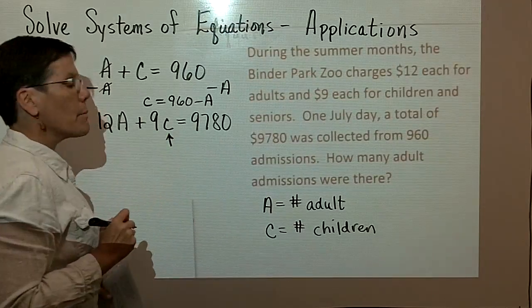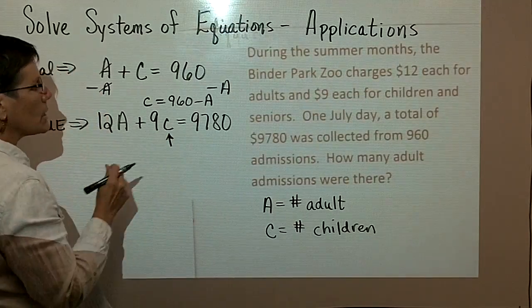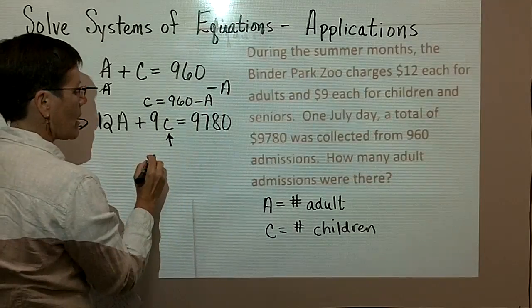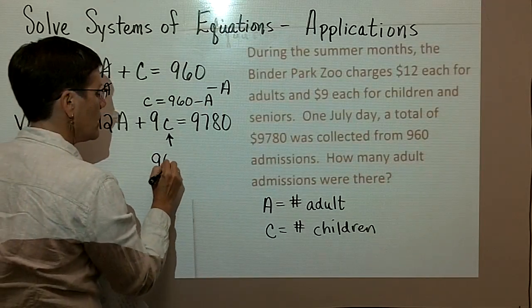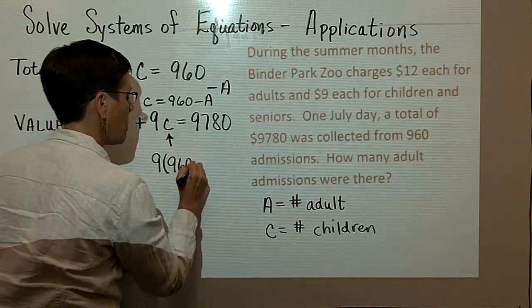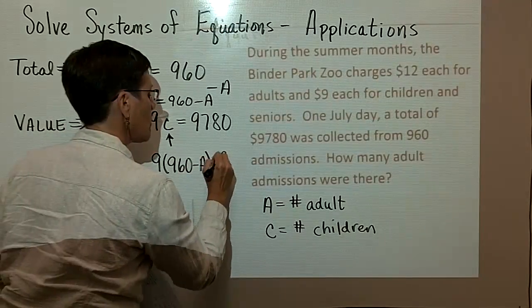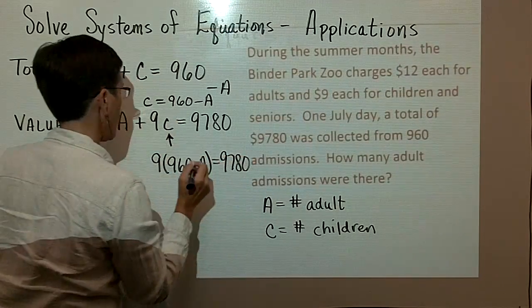Right here, then, I'm going to substitute in for C the expression 960 minus A. So I'll have the 9 times the 960 minus the A.